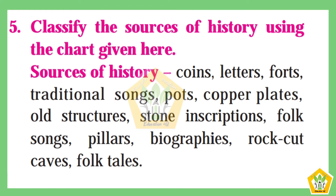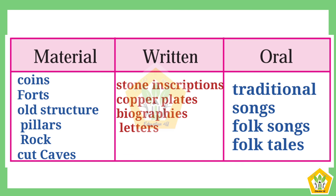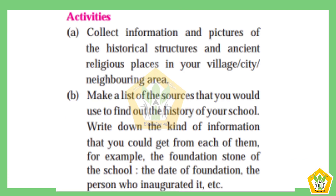Question number five: Classify the sources of history using the chart given. We need to segregate them into material, written, and oral. Under material: coins, forts, old structures, pillar rocks, and cut caves. Under written: stone inscriptions, copper plates, biographies, and letters. Under oral: traditional songs, folk songs, and folk notes.